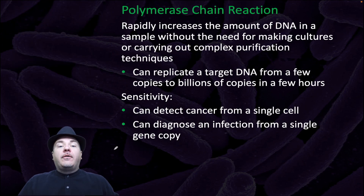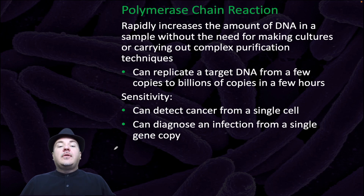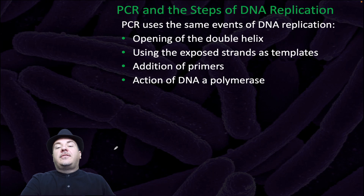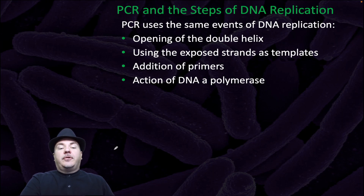Another technique very often used is polymerase chain reaction, or PCR. PCR rapidly increases the amount of DNA in a sample without need for making cultures or carrying out complex purification techniques. It can replicate a target DNA from just a few copies to billions of copies within a few hours. It's very sensitive — it can detect cancer from a single cell and diagnose an infection from a single gene copy. PCR uses the same events as DNA replication: opening up of the double helix, using the exposed strands as templates, addition of primers, and then action of a DNA polymerase.